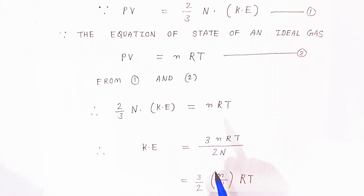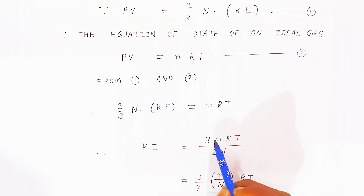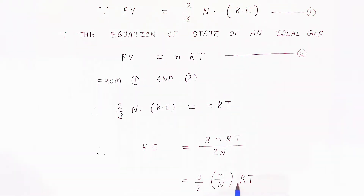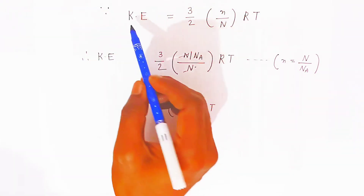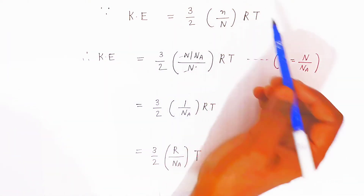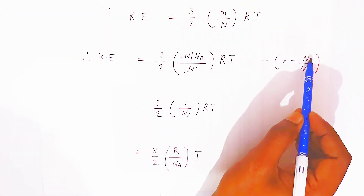Equating the two expressions: kinetic energy = (3/2)·(n/N)·RT. Rearranging, the 3 goes to the numerator and 2N goes to the denominator, giving kinetic energy = (3/2)·(n/N)·RT.